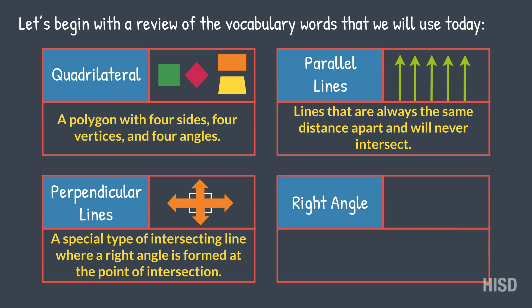Right angle: an angle that forms a square corner, measuring 90 degrees.